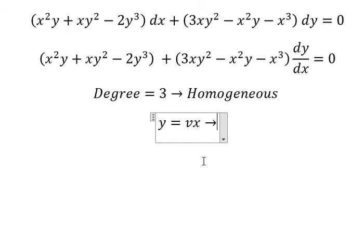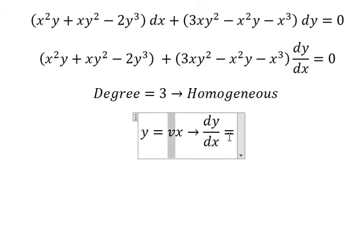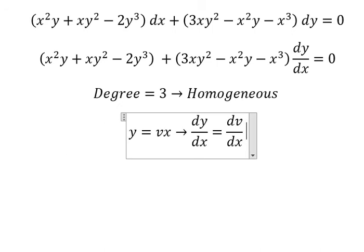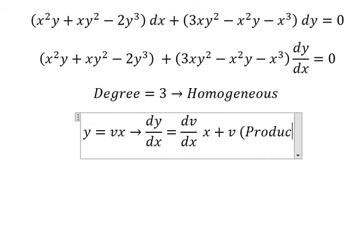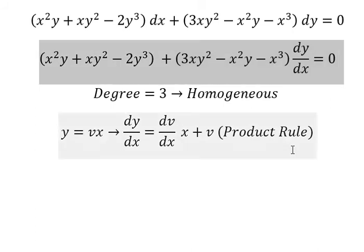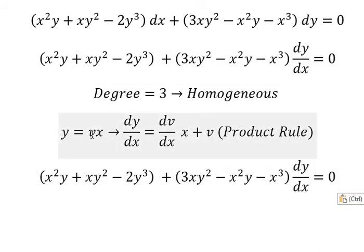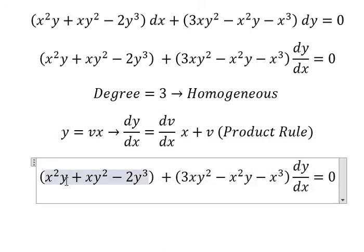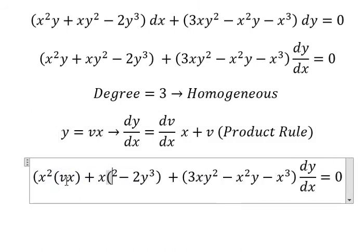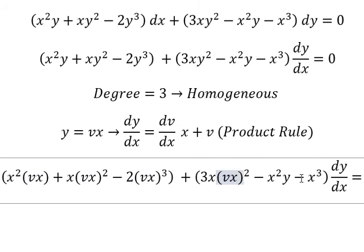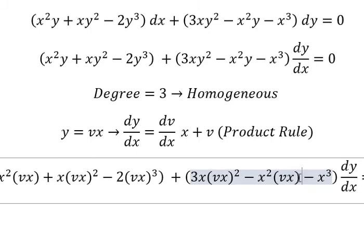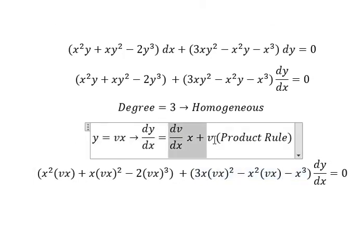So I will substitute y equals vx. Later we do first derivative for both sides. This one we change to dy over dx. This one is about dv over dx multiplied by x. This one is about number one, so we have v. So this is the product rule. Why we change by vx? dy over dx we change by this one.